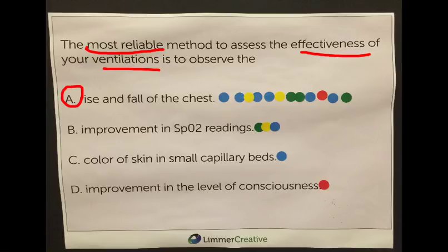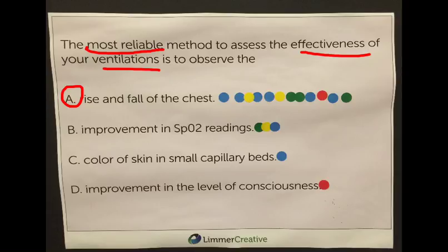Therefore, the rise and fall of the chest is the correct answer, and as you can see, an overwhelming majority of the educators chose that. Now, just because it seemed like an easier question doesn't mean there aren't some really good teaching points here. If a student didn't focus on the word ventilations and thought generally about overall oxygenation, they might look for a high-tech answer like oximetry readings. But when you know what you're measuring — ventilations — the rise and fall of the chest clearly rose above.